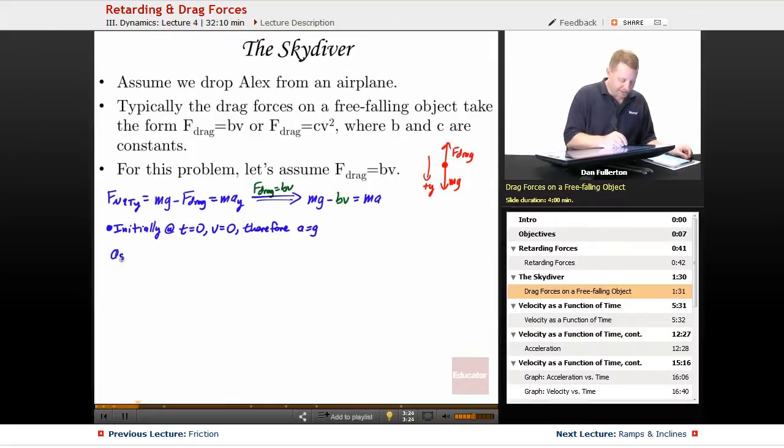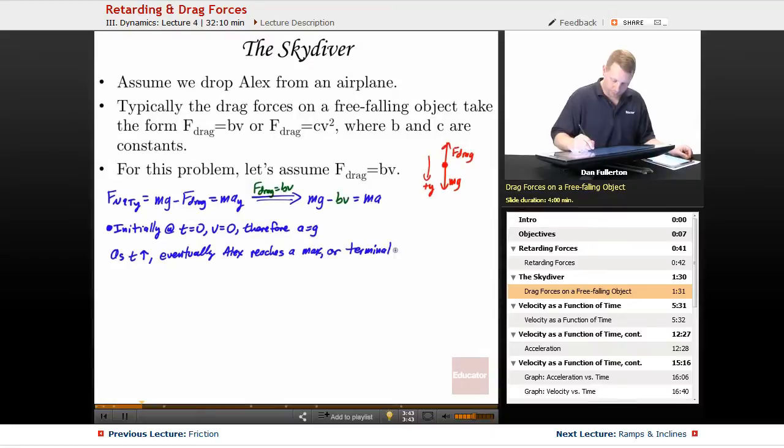Now as t increases, as we head toward infinity, eventually Alex reaches a maximum, or terminal velocity. We'll abbreviate that vt and at that point acceleration is equal to 0.